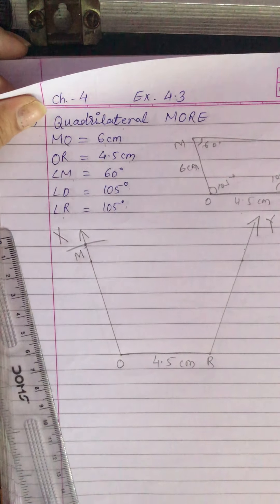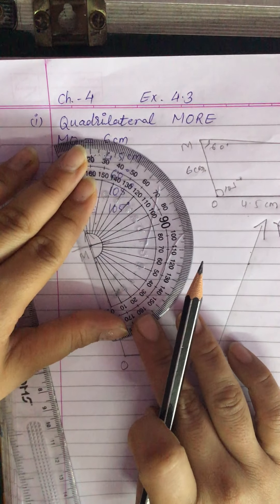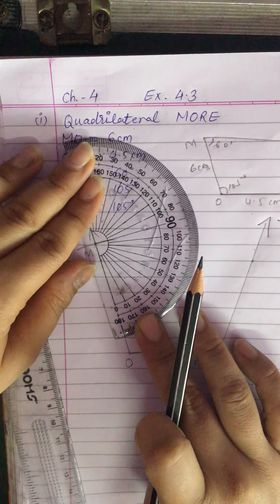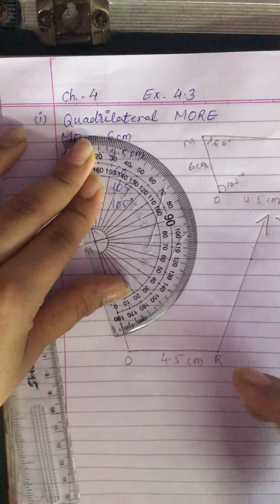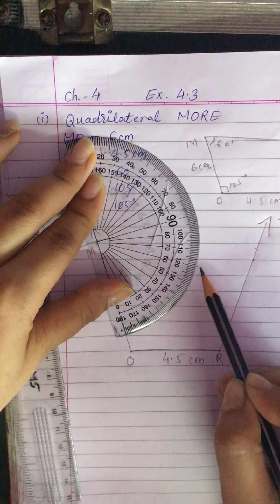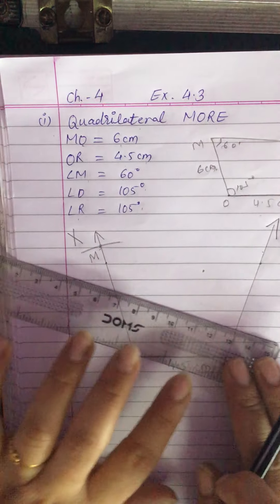Now at M we have to draw an angle of 60 degrees, which is an acute angle. So it is 60 degrees. Join this ray and join this ray also.